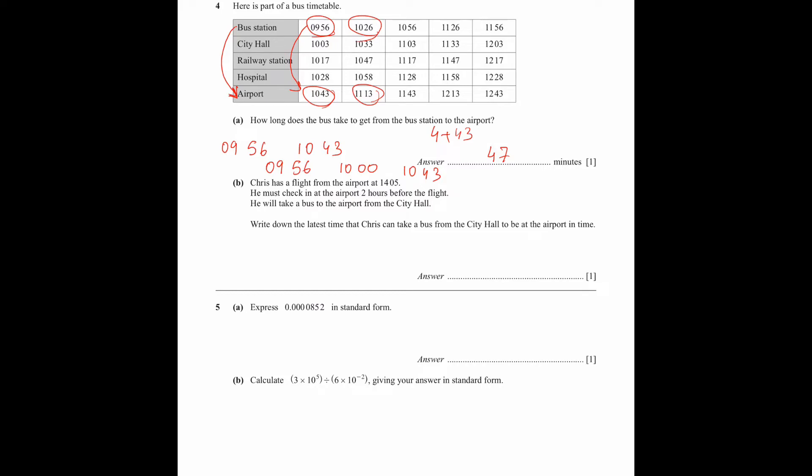Part B says, Chris has a flight from the airport at 14:05. He must check in at the airport two hours before the flight. Two hours before the flight means that he will be available at the airport at 12:05. If he is one minute late, he will miss the flight. He will come first, he will be fine, but he cannot be late.